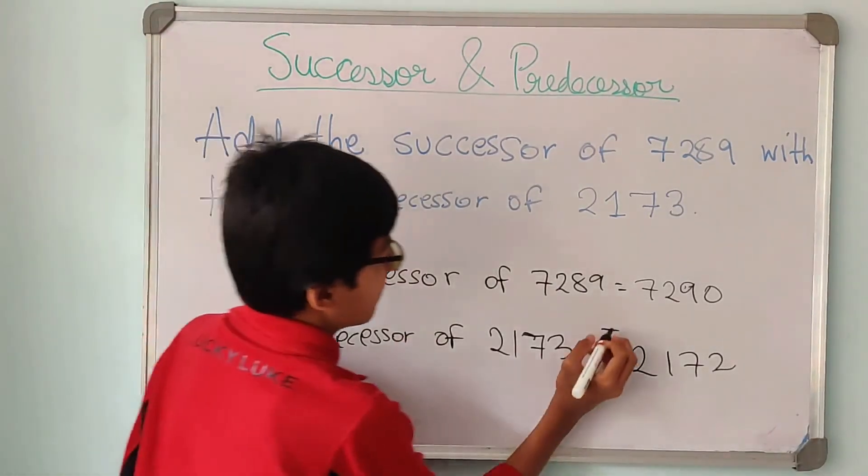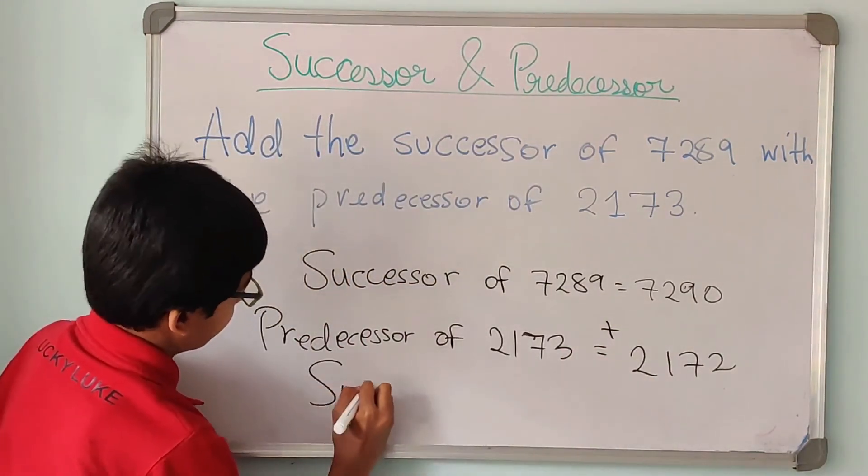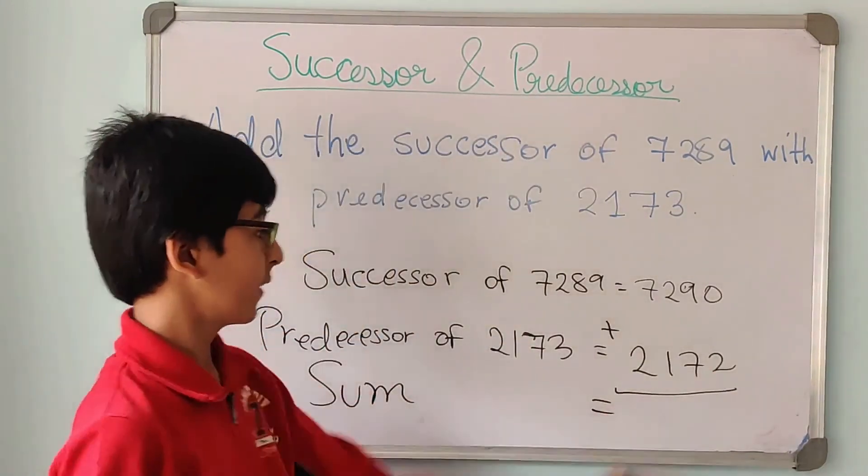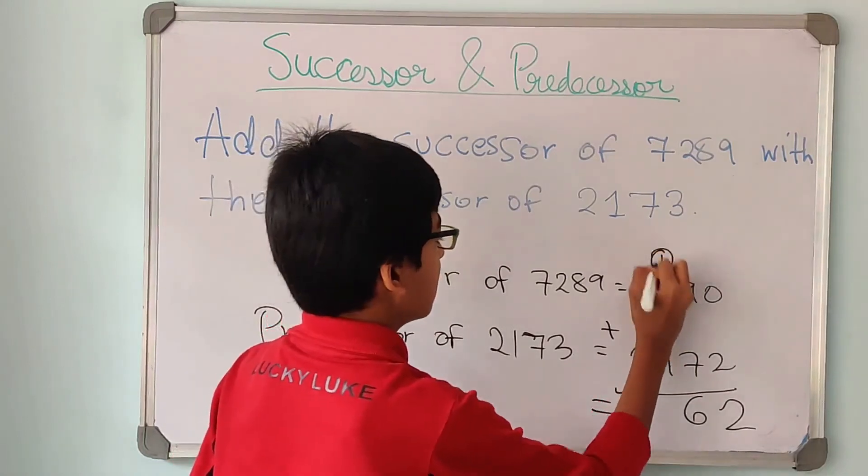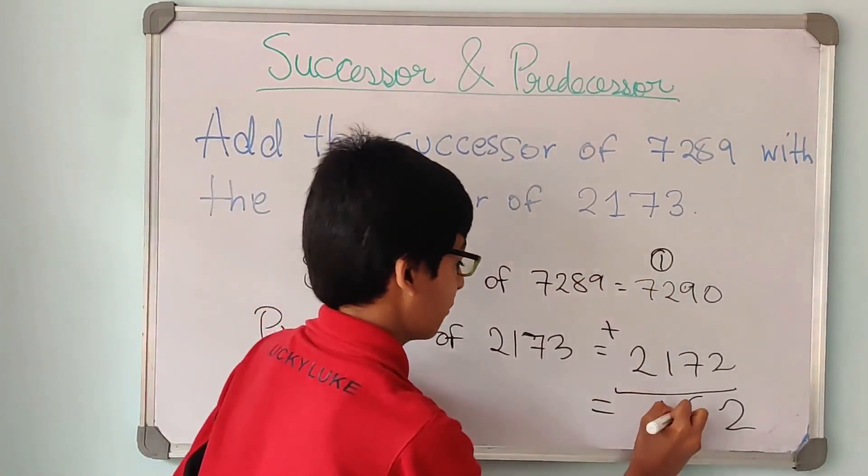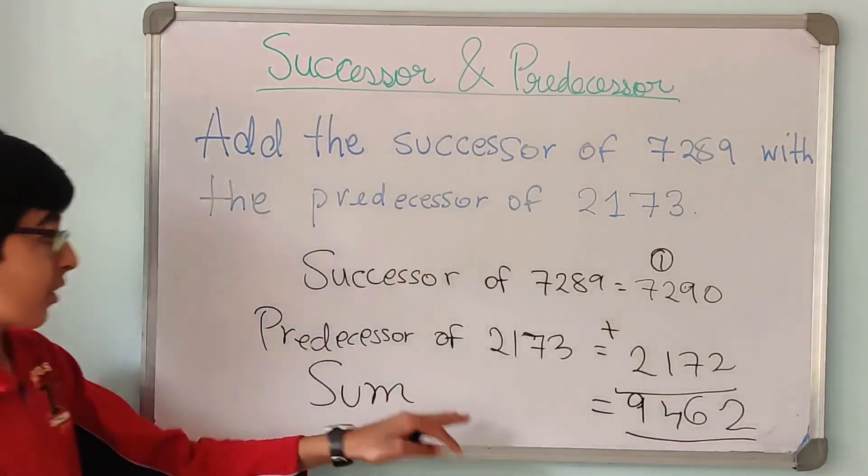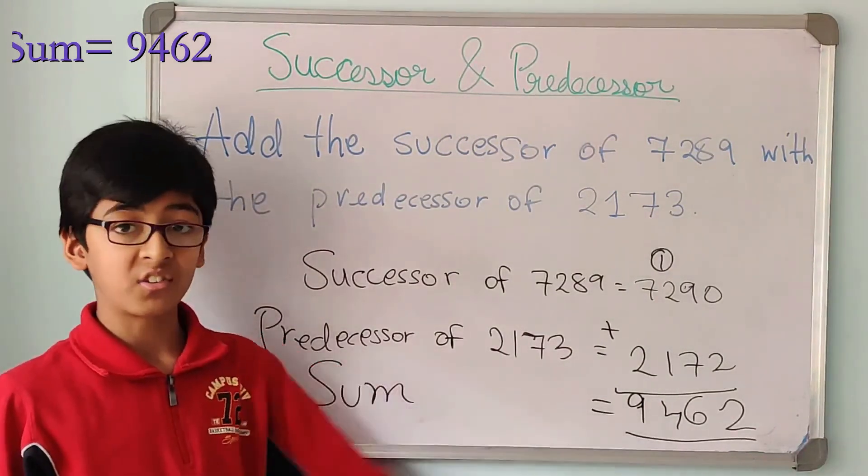Now we have to add them. So the sum is going to be 0 plus 2 is 2. 9 plus 7 is 16, one goes carried forward. 1 plus 2 is 3, 3 plus 1 is 4, 7 plus 2 is 9. So the sum is going to be 9462.